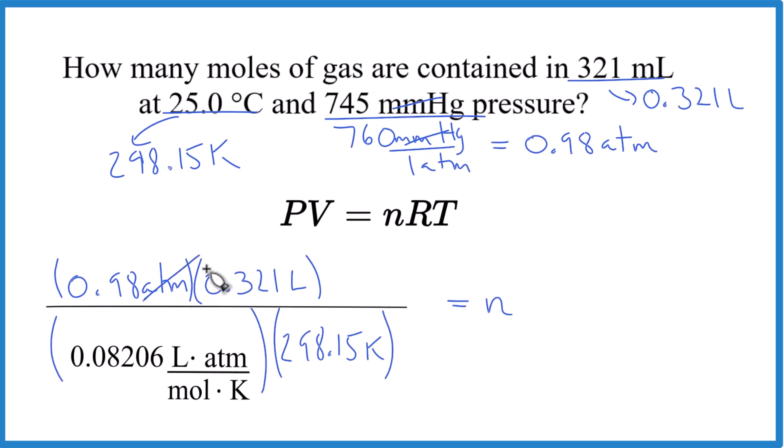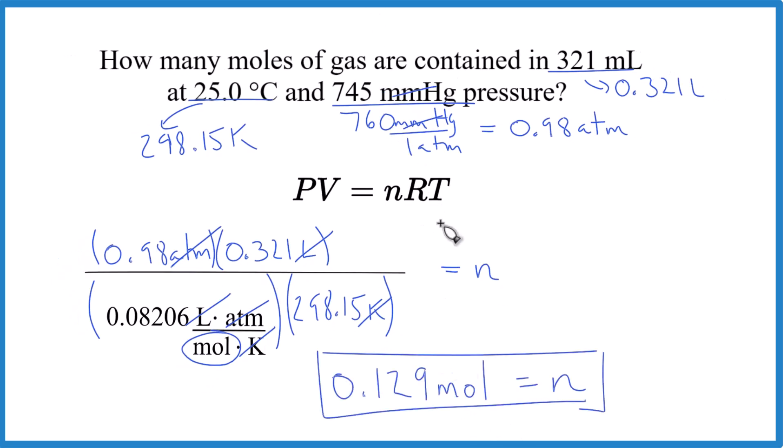Atmospheres, atmospheres. Liters, liters. Kelvin, Kelvin. We are left with moles. And that's what we're looking for. So we set this up correctly. Multiply the top and multiply the bottom. Divide the numerator by the denominator. We end up with 0.129 moles.